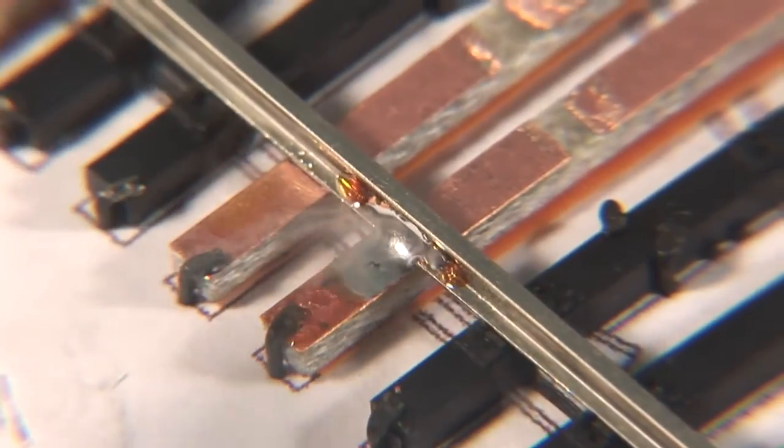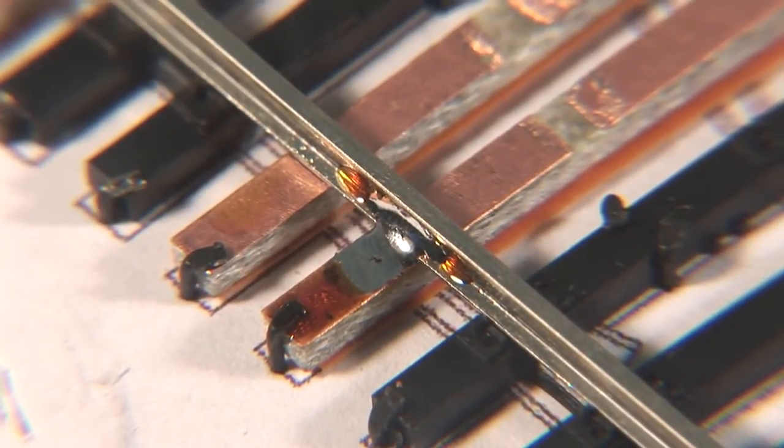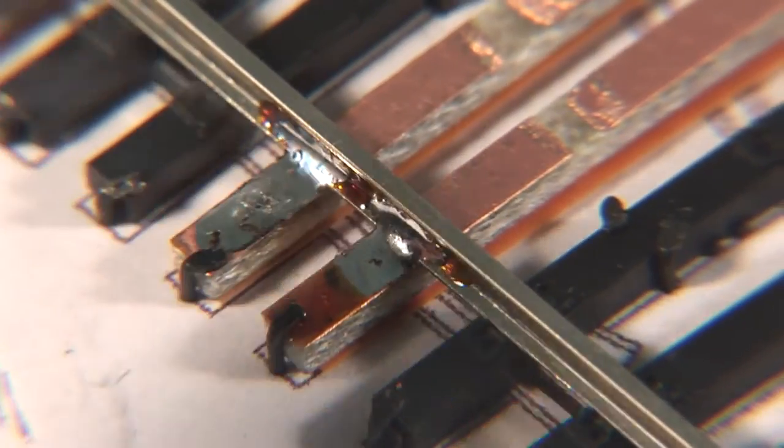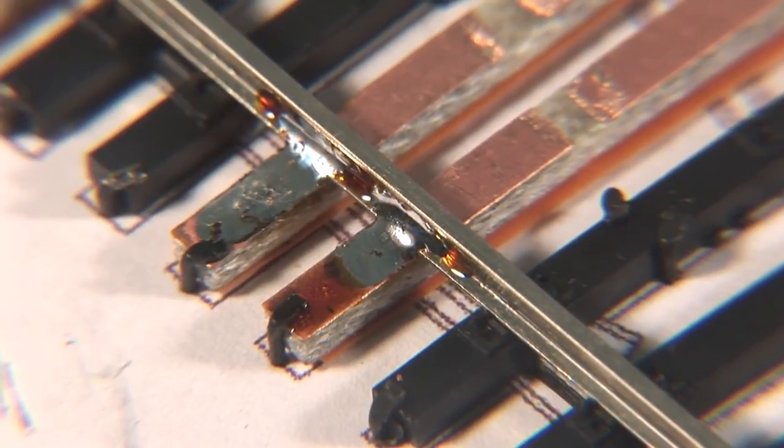The solder flows easily and rapidly into the joint, and I only need to apply the tip to the area for about one second, fast enough that the plastic ties nearby are never affected.